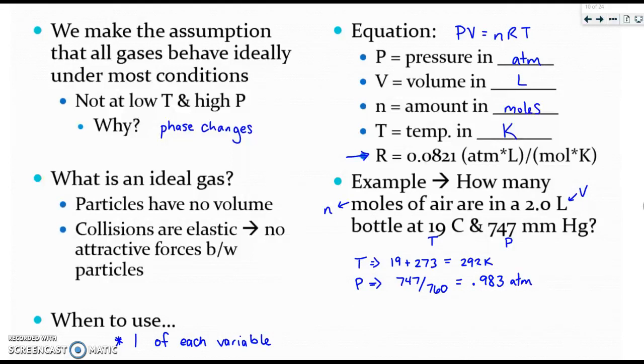And then just like with all the other laws I'm just going to plug all my numbers in and solve for the missing piece. So my 0.983 is my pressure. My volume is 2.0. I don't know my N. My R is 0.0821 and my T is 292. And then you go through and solve algebraically by multiplying and dividing. And N would equal 0.082 moles.